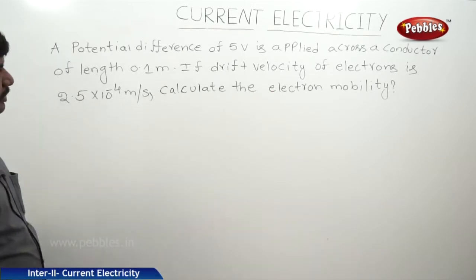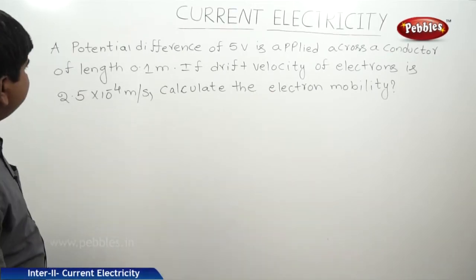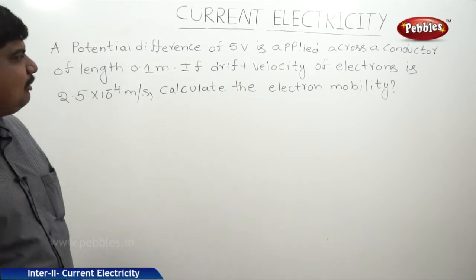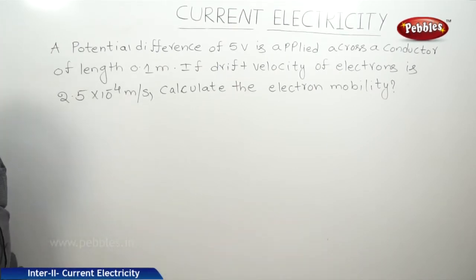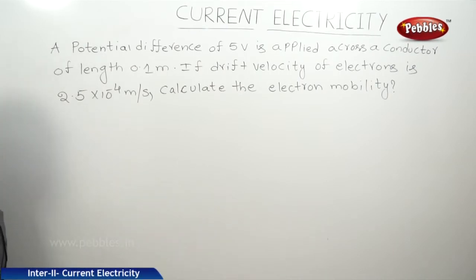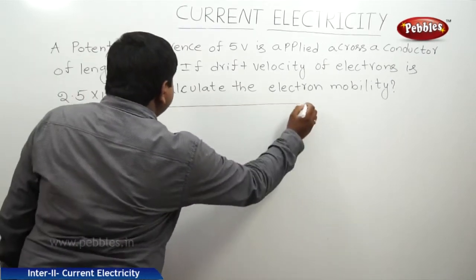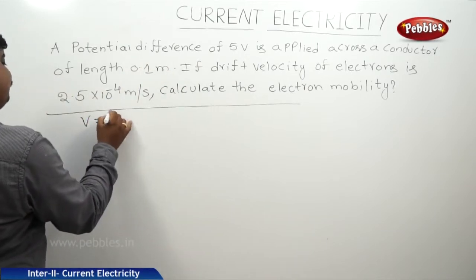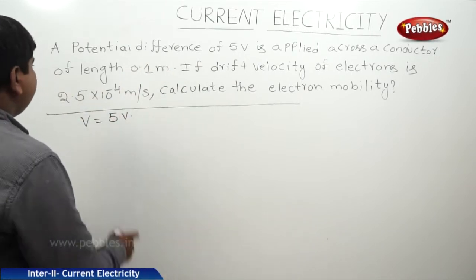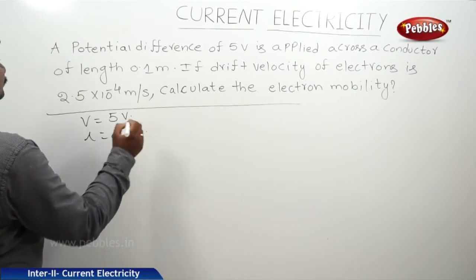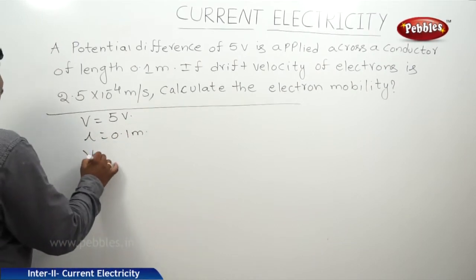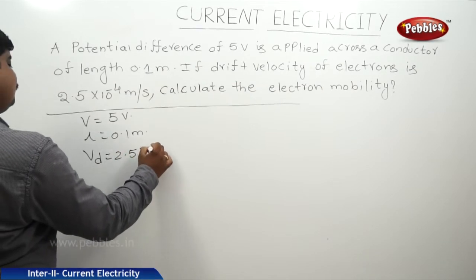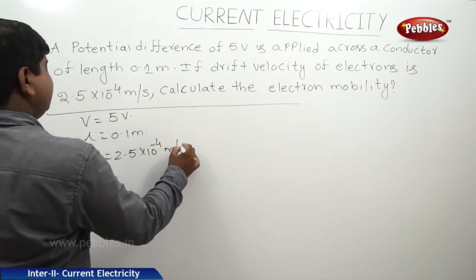The next problem is based on the concept of mobility of electrons. A potential difference of 5 volts is applied across a conductor of length 0.1 meter. If the drift velocity of electrons is 2.5 into 10 to the power of minus 4 meters per second, calculate the electron mobility. The potential difference applied is 5 volts, the length of the conductor is 0.1 meter, and the drift velocity is 2.5 into 10 to the power of minus 4 meters per second.